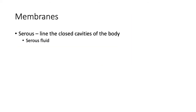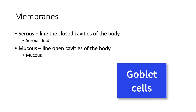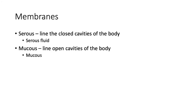We have other membranes in our bodies as well. The serous membranes line the closed cavities and secrete serous fluid into the space between the visceral and parietal membranes. Mucous membranes line the cavities in the body that are open to the outside — places like the mouth, the esophagus, the trachea, and the anus. These membranes are often associated with goblet cells, which secrete mucus to protect and moisten these areas.